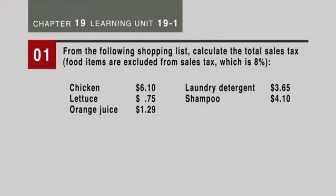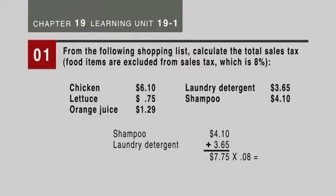Things that are not edible — the $4.10 for shampoo and the laundry detergent at $3.65 — total $7.75. We're going to multiply that times 0.08, the rate, which gives us a tax of $0.62.